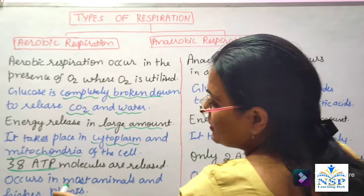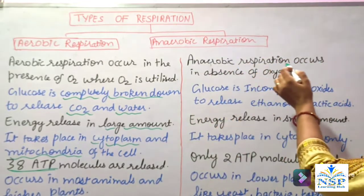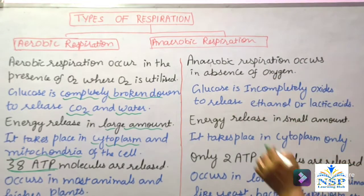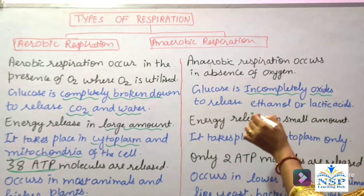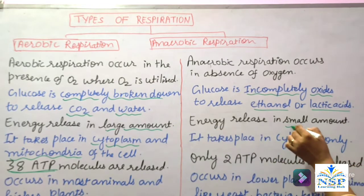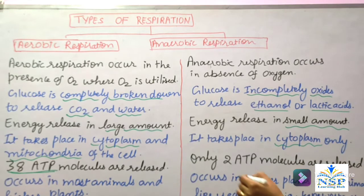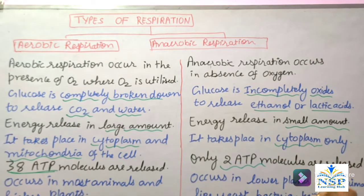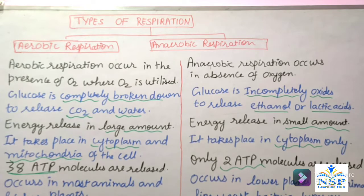Aerobic respiration occurs in most animals and higher plants. Anaerobic respiration occurs in the absence of oxygen. Glucose is incompletely oxidized to release ethanol or lactic acid. Energy is released in a small amount. It takes place only in the cytoplasm. Only 2 ATP molecules are released in anaerobic respiration. Anaerobic respiration occurs in lower plants and animals such as yeast, bacteria, and tapeworms.